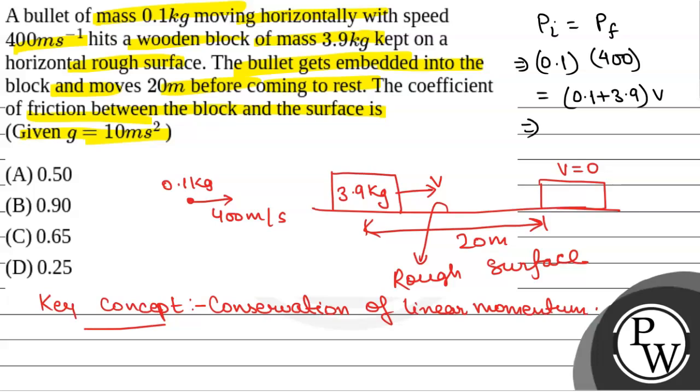So from here we will have v is equal to 40 by 4 that is equal to 10 meter per second. So this is the combined speed of bullet and block.